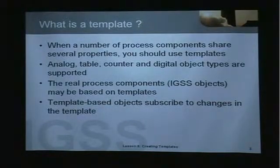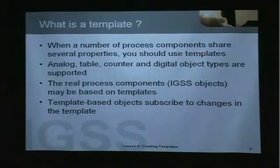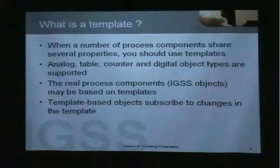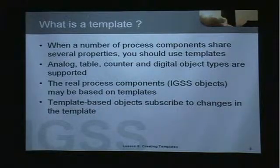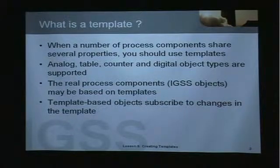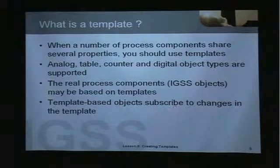When you have a number of process components that share several properties, you should use a template in IGSS. You can create templates for analog, table, counter, and digital objects. The real process components or IGSS objects may be based on a template, and this is our recommendation because you will save a lot of time. The objects that you base on a template will subscribe to any change you go back and make in the template.